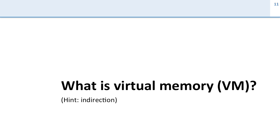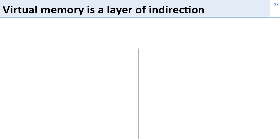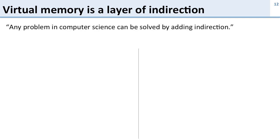So now let's talk about what virtual memory is. Virtual memory is all about indirection. Remember we mentioned that there are different address spaces for the program and the memory, and virtual memory is about the indirection pointing between them. Virtual memory is a layer of indirection, and this comes from the general idea that any problem in computer science can be solved by adding indirection. Let's take a look at how this works in virtual memory.